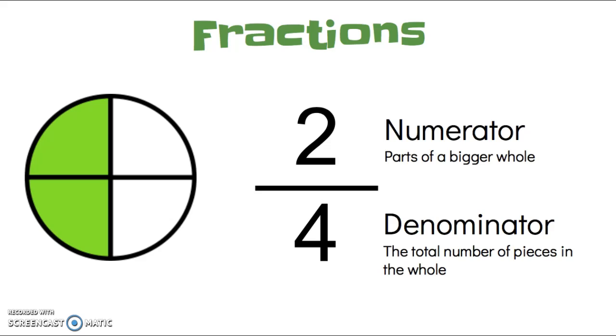So, for example, this fraction that's shown on the screen is 2 fourths. Our numerator is 2, there are two pieces that are colored, and our denominator is 4. There are four total pieces of our pie.